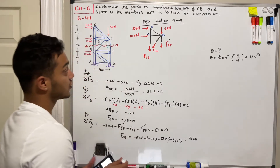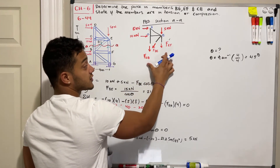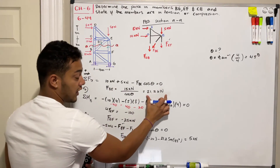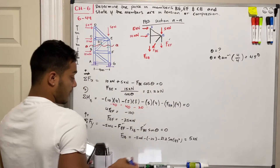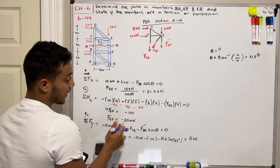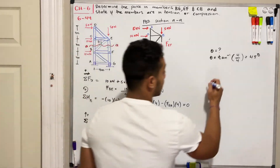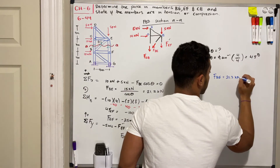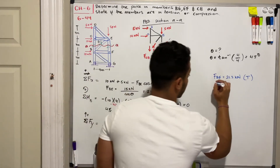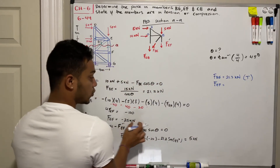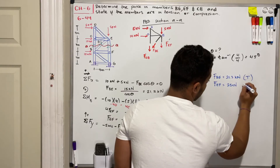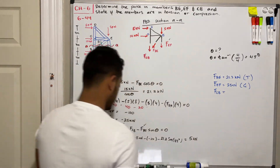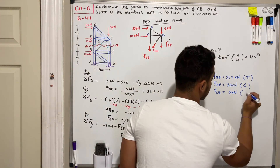To determine tension or compression: all forces were drawn assuming tension (away from the truss). A positive result means tension; negative means compression. Final answers: FBE = 21.2 kN in tension; FEF = 25 kN in compression; FCV = 5 kN in tension.